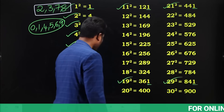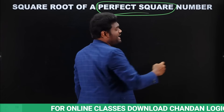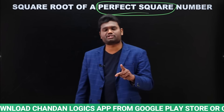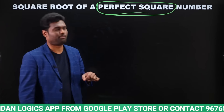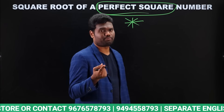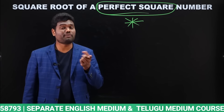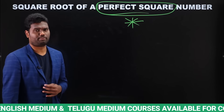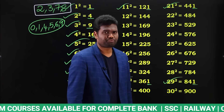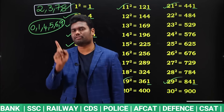Now we are going to discuss the technique based upon perfect square numbers only. Whatever technique we are going to discuss is applicable only if the number is a perfect square. If the number is a non-perfect square, this technique is not applicable. From a complete examination point of view, how to calculate the square root of a perfect square number is important — non-perfect square is not asked in exams.